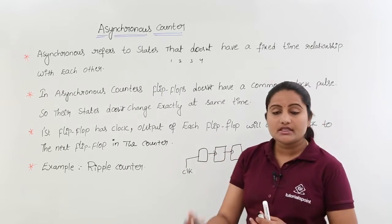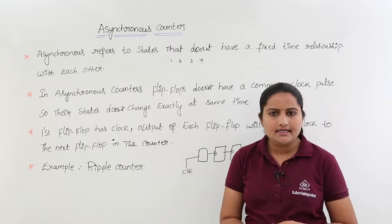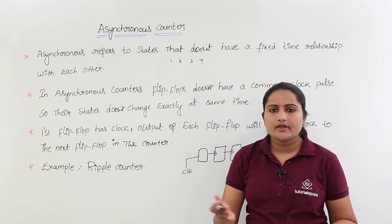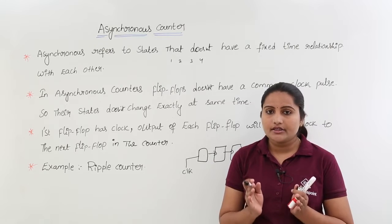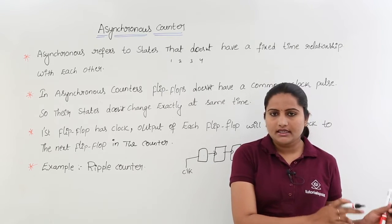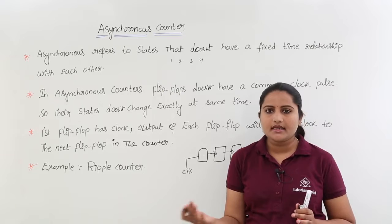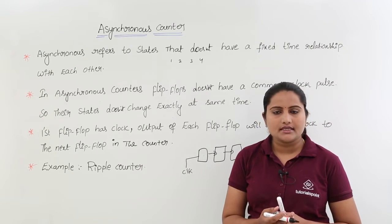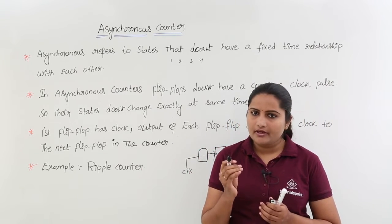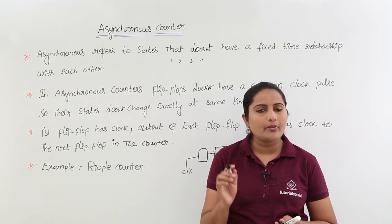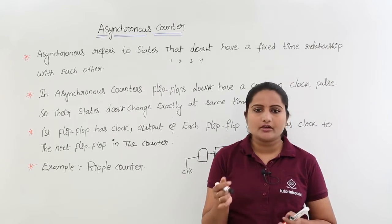So like this you are going to design asynchronous counters in the next classes. The main example of an asynchronous counter is the ripple counter. Ripple counter is nothing but an asynchronous counter — you use flip flops with a single clock to the first flip flop, and from the next onwards you give the output of each flip flop to the next as a clock signal. For any counter design, you are going to use JK flip flop or T flip flop in toggle condition.